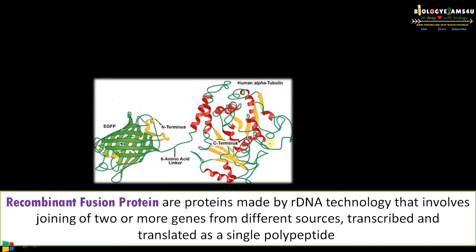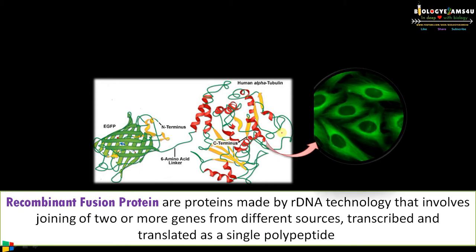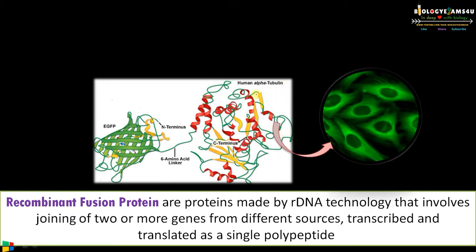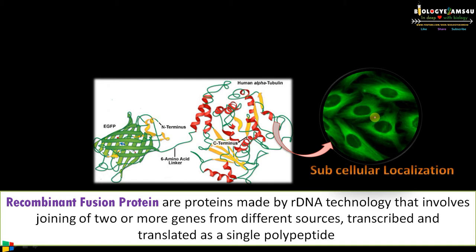This is a recombinant fusion protein. Here, the human alpha tubulin gene is joined to green fluorescent protein, making a fusion protein. Because of this, subcellular localization of human alpha tubulin is possible under a fluorescence microscope. The GFP, or green fluorescent protein, emits green light upon excitation by UV rays, allowing us to localize alpha tubulin — a component of the microtubule cytoskeleton — inside the cell. This green color marks the location of alpha tubulin inside the cell.